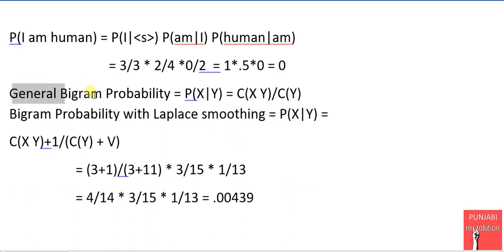It is the general formula of bigram model which is probability of X given Y is equal to count of XY divided by count of Y. But after applying Laplacian smoothing, this conditional probability will become count of XY plus 1 divided by count of Y plus V, V for vocabulary.